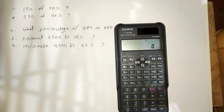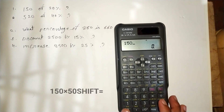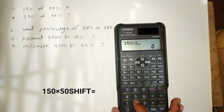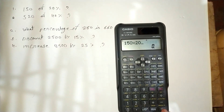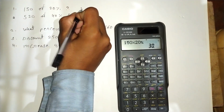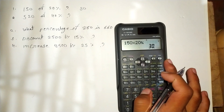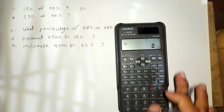The first question is 150 of 20 percent. Press 150, then multiply by 20, then press Shift and Equals. We get 30. So 150 of 20 percent is 30.